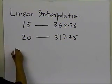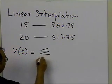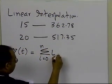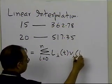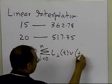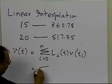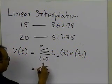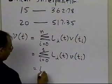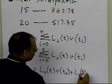For Lagrangian polynomial interpolation, the velocity is expressed as the summation from i=0 to n of l_i(t) times v(t_i) — the weighting function multiplied by the velocity values at the chosen points. Since n=1 for a linear interpolant, expanding gives l0(t)·v(t0) plus l1(t)·v(t1).